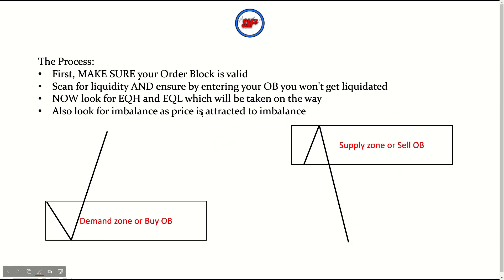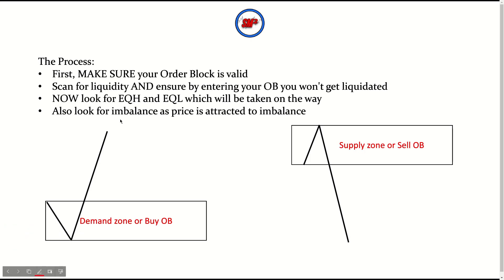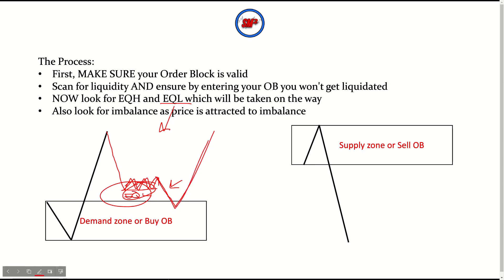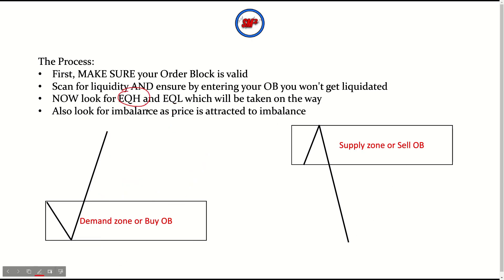The third thing to increase win rate is to look for equal highs and equal lows that will be taken out on the way to your order block. For a buy order block, we're looking for equal lows right above it. I like this because price can grab those equal lows, which fuels the move, tap into our order block, and then show us reaction. This gives extra confluence indicating price is looking to grab liquidity before tapping the order block.